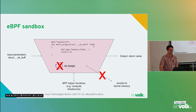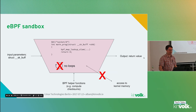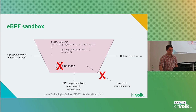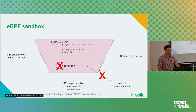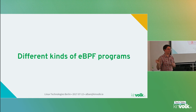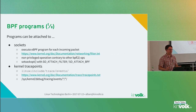A BPF program is basically just a function. It has some input — the parameter — which in the case of socket filtering is a socket buffer, a packet. It has some output: in socket filtering, that's to say 'keep this packet' or 'drop this packet.' The program can also call BPF helper functions — for example, there are functions related to computing the checksum of a packet. There are restrictions: it's not allowed to access any kind of kernel memory arbitrarily, for the protection of the kernel.